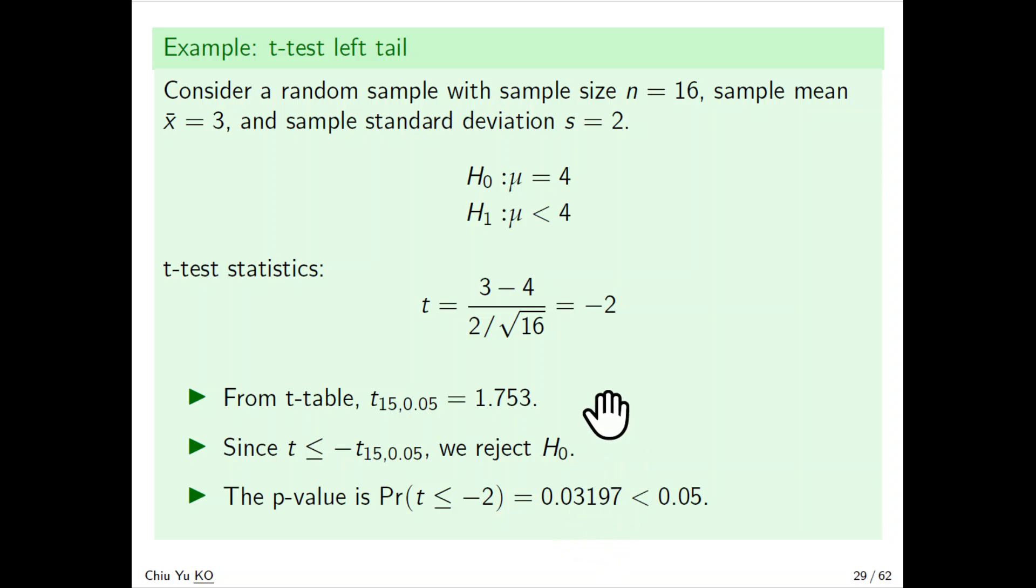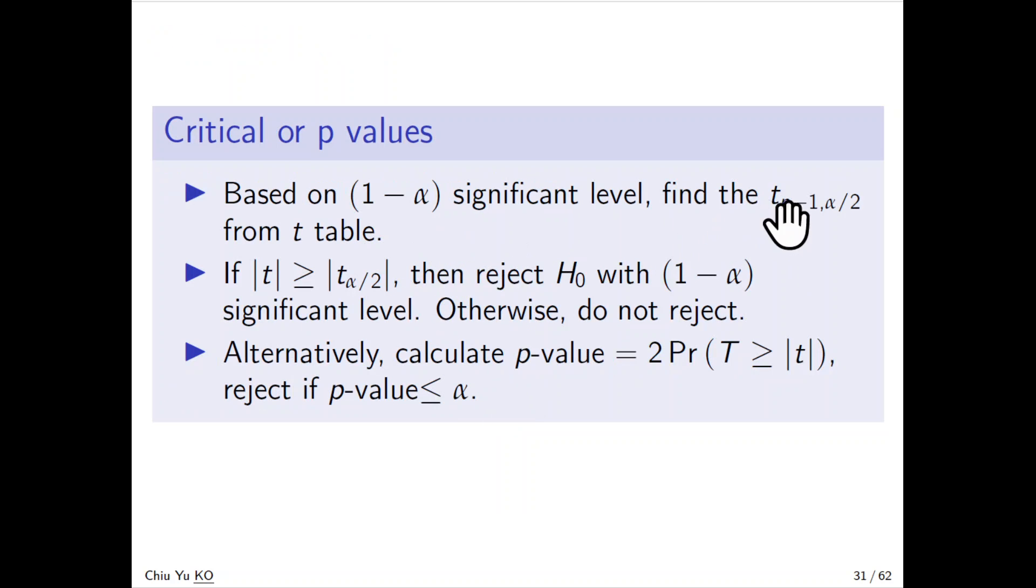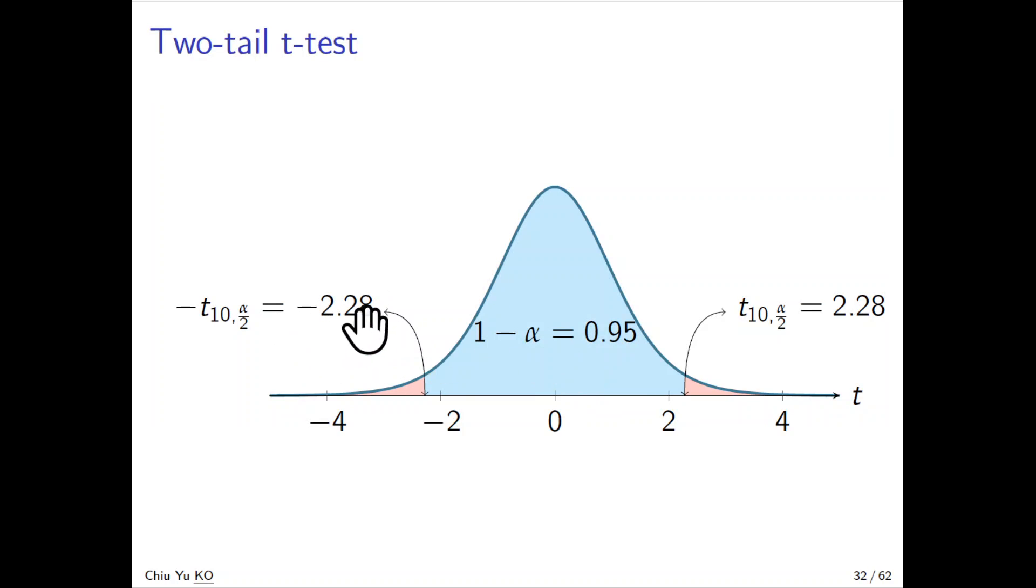What about both sides, two-tailed? Same idea - nothing different except when you calculate the rejection region. Everything is the same, but the only difference is instead of α, it's α/2. Now it's much further because you move the probability to two sides.